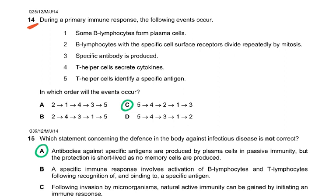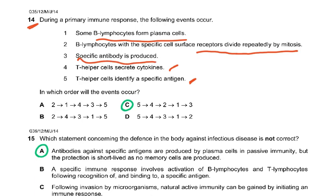Question 14: during a primary immune response, the following events occur: some B lymphocytes form plasma cells; B lymphocytes with a specific cell surface receptor divide repeatedly by mitosis; specific antibodies are produced; T helper cells secrete cytokines; T helper cells identify a specific antigen. The answer is C because T helper cells identify a specific pathogen first (fifth), then secrete cytokines (fourth), then B lymphocytes divide by mitosis (two), then some form plasma cells (one), then specific antibodies are produced (three). So the order is 5, 4, 2, 1, 3.